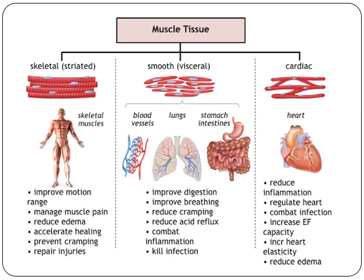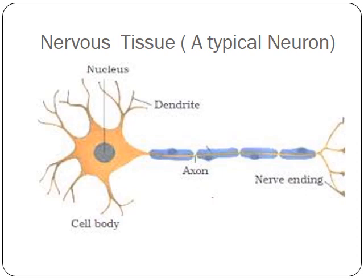Cardiac muscle is present only in the wall of the heart. It helps combat inflammation and, like smooth muscles, helps reduce swelling. Like skeletal muscle, it increases efficiency — meaning it increases heart rate so that the heart can work properly. Overall, it regulates the functioning of the heart. Now, about nervous tissue — you can see in the figure it has a cell body, nucleus, dendrites, axon, and nerve endings, which we will discuss in the next slide.